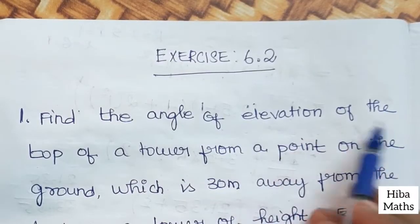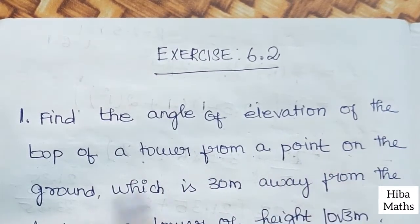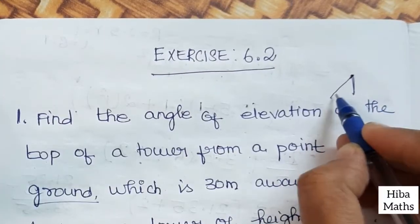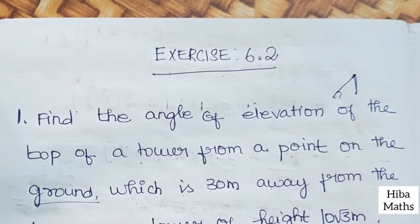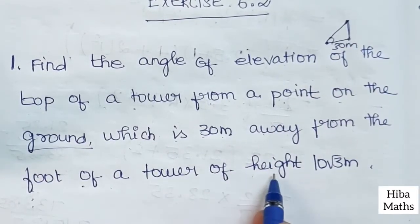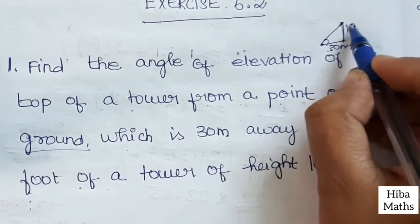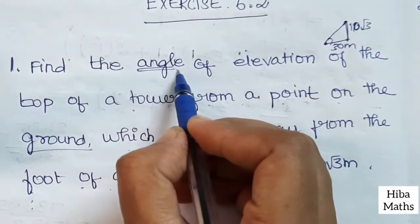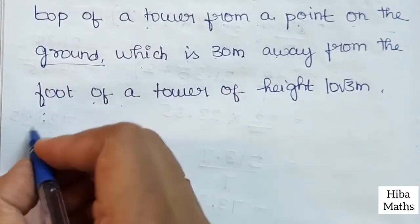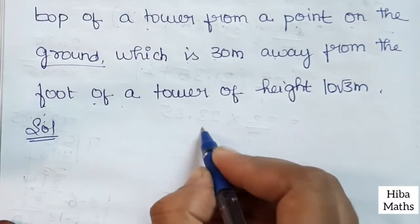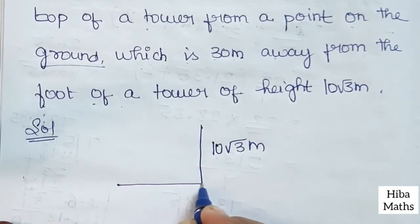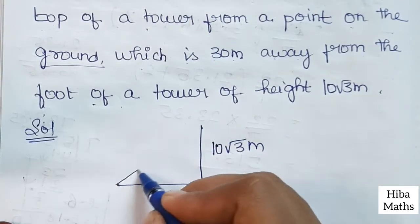Find the angle of elevation of the top of a tower from a point on the ground, which is 30 meters away from the foot of the tower. The height of the tower is 10√3 meters. The point is 30 meters away from the foot of the tower. We need to find the angle of elevation at the top.